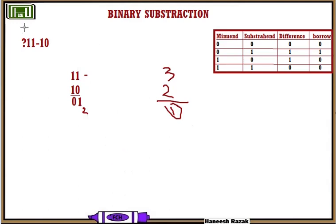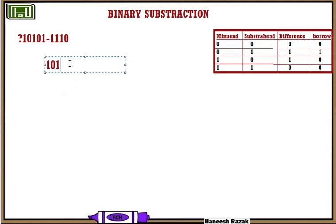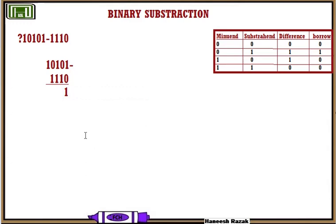We are going to do one more example: 10101 minus 1110. Write the minuend: 1,0,1,0,1. Write the subtrahend: 1,1,1,0. Subtract column by column. First, 1 minus 0 is 1. Write 1. Next column: 0 minus 1 — we need to borrow.